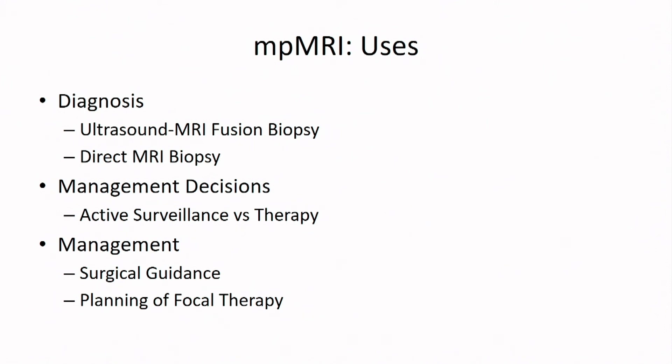MRI has many uses and the list has increased. We got into this 15 years ago because we wanted to plan our surgeries better. There was an article from Memorial Sloan Kettering suggesting that MRI prior to surgery could improve a surgeon's decision making in terms of nerve sparing. We got into it about the time the robot came about, as a way to see what was going on when we could no longer feel what was going on. When Lenny Marks joined the group in 2009, he started to use this for diagnosis, particularly with ultrasound MRI fusion biopsy.